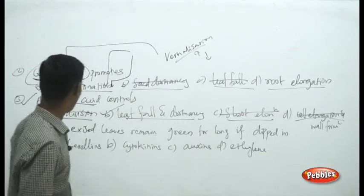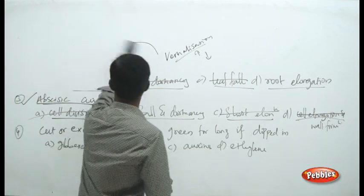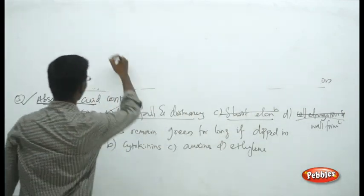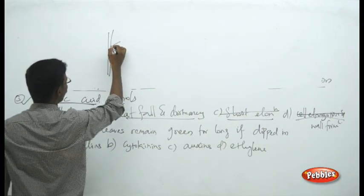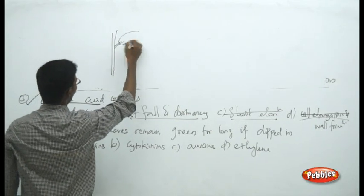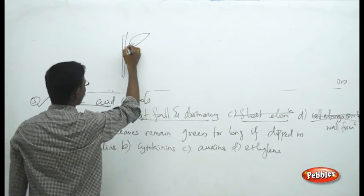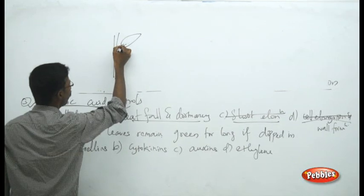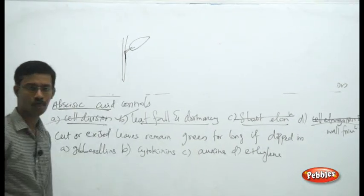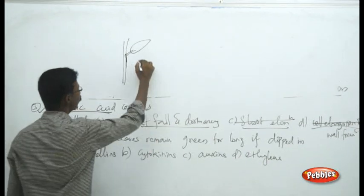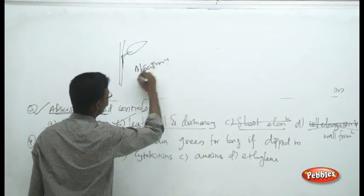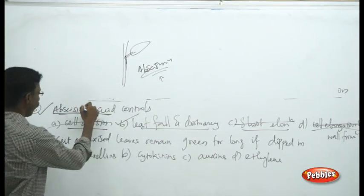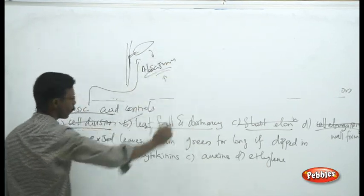Abscisic acid — the term itself has meaning. 'Abscission' means the removal or loss of something. In a stem, from the petiole comes the leaf, and the connecting layer from petiole to stem is controlled by abscisic acid hormone. During abscission — the falling of leaves from the stem — abscisic acid causes the leaf to fall from the stem.